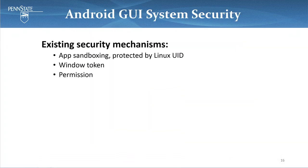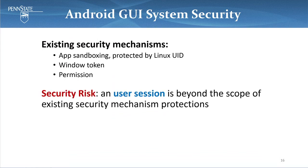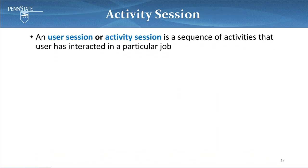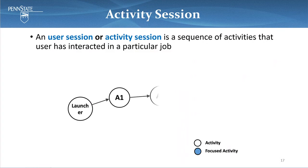We have seen all these existing defenses, including app sandboxing protected by UID, window tokens, and the well-known permission system. So the question is: why do we still have security risks? The reason is that a user session is beyond the scope of all existing protections. So what is a user session? We define a user session, or activity session, to be a sequence of activities that users have interacted with in a particular job.